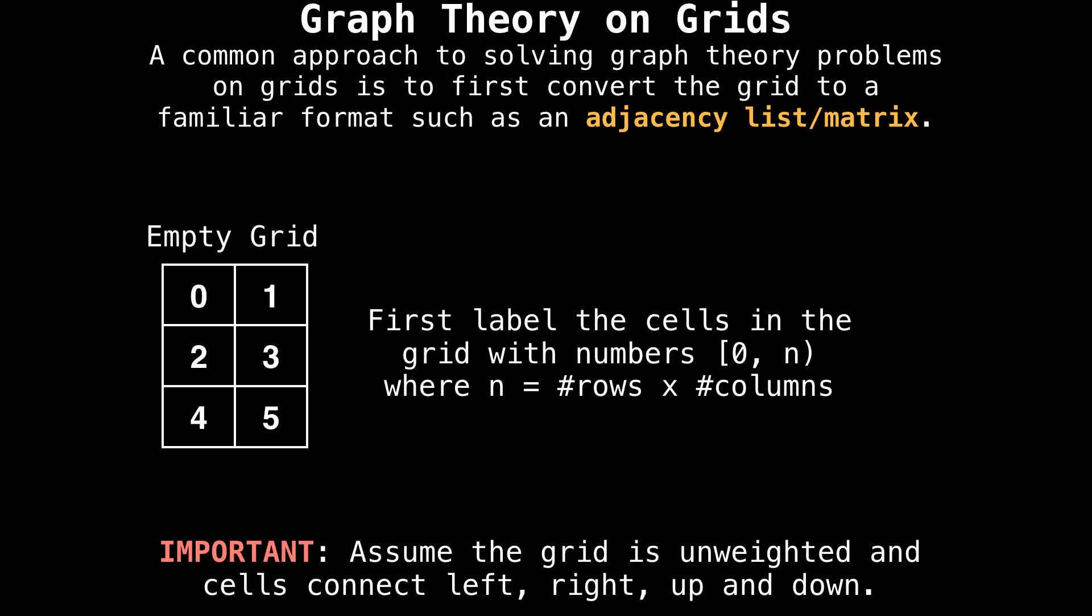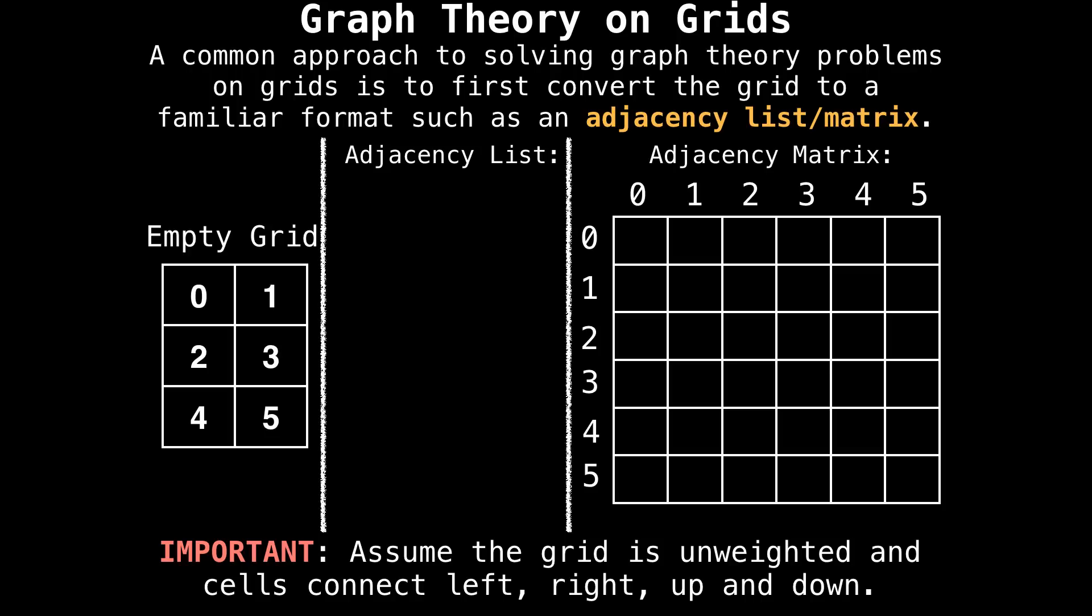So in this grid on the left, there are six cells, so I labeled each cell with the numbers zero through six non-inclusive. Then we actually want to construct an adjacency list and an adjacency matrix based off this grid. The adjacency list doesn't require any setup because it's simply a map that we initialize.